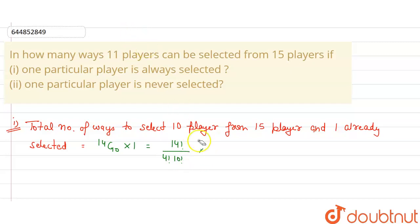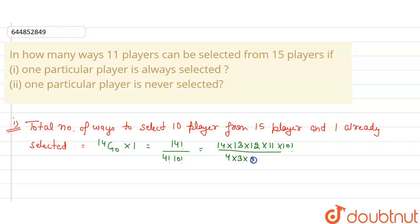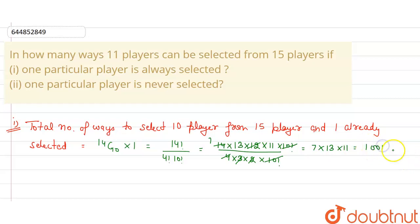This equals 14 × 13 × 12 × 11 × 10 factorial divided by 4 × 3 × 2. 12 cancels out, and 14 gives 7. So we have 7 × 13 × 11, which equals 1001 ways.